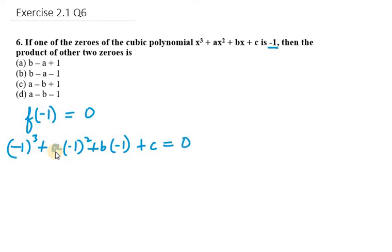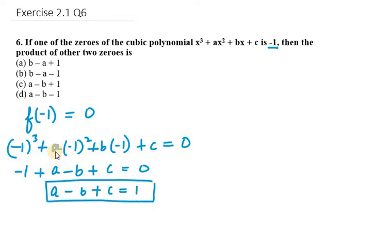Now the first term (-1)³ will be -1 plus a minus b plus c equals 0. So what we get here is a minus b plus c equals 1. So this is my first equation.